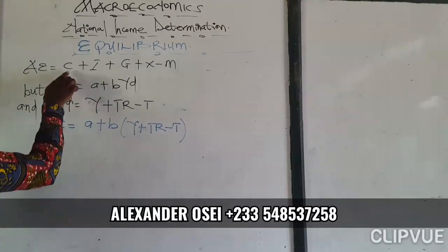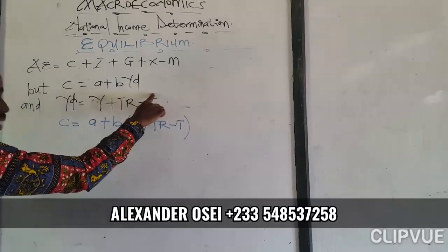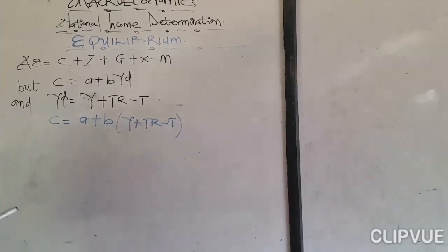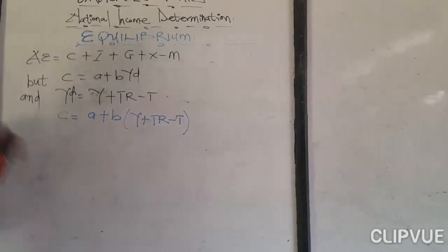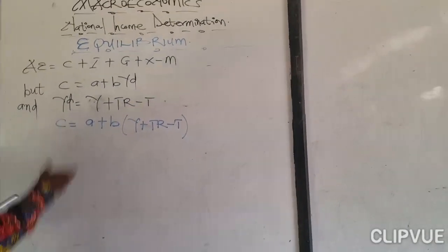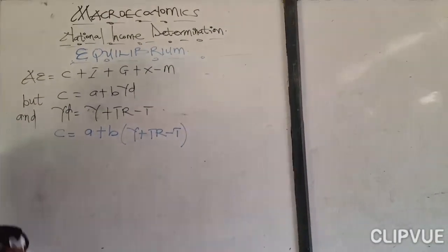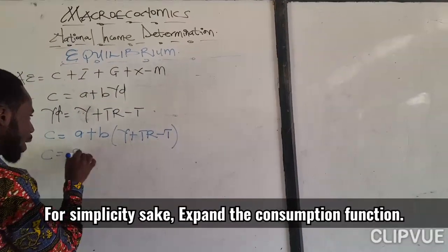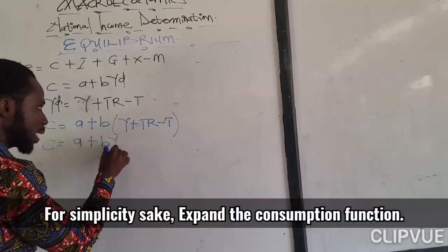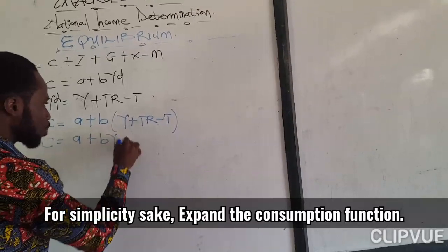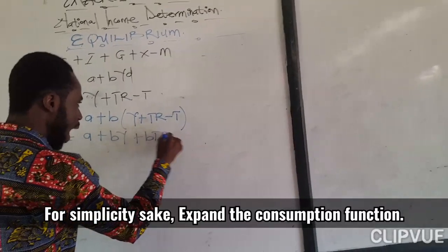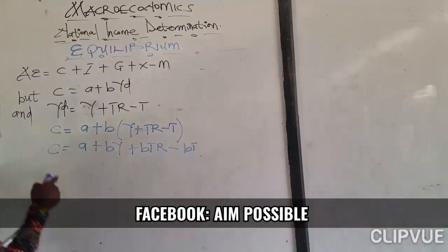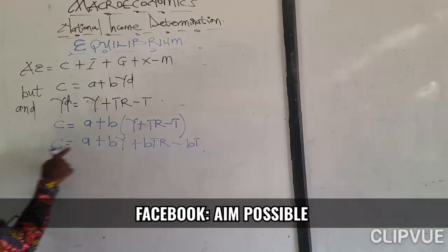So our consumption function is no longer C equals A plus BYD, but it is now expanded. We are going to get consumption equal to A plus BY plus BTR minus BT.